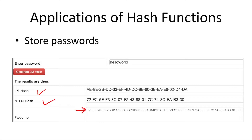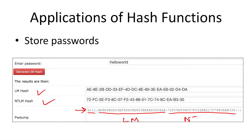There are multiple rows, one row per user account. You can see we have a username, then one hash value, then another hash value. One of them is the LM hash and the other is the NTLM hash value. That's the format in which password hash values are stored.